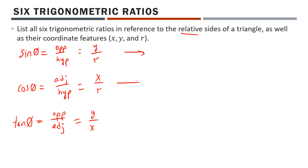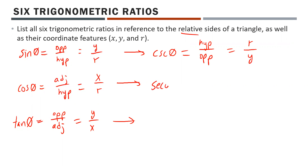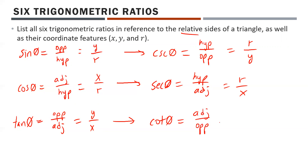From these, we have all three reciprocal trig ratios as well. The reciprocal trig ratio for sine is cosecant. Cosecant theta is just the reciprocal — hypotenuse over opposite, or r over y. For secant theta, that's hypotenuse over adjacent, or r over x. For tangent, the reciprocal ratio is cotangent, so cotangent theta equals adjacent over opposite, or x over y.